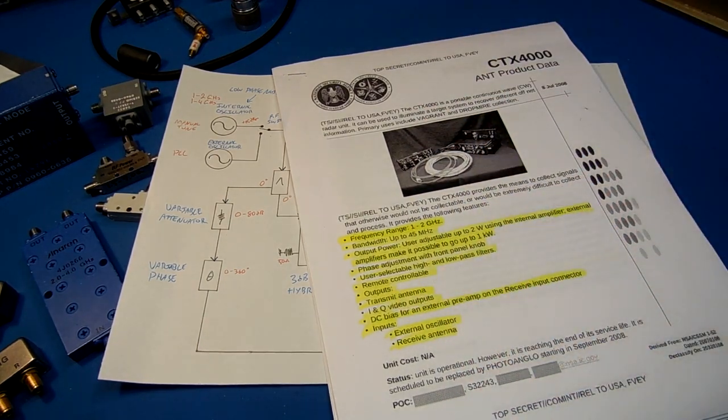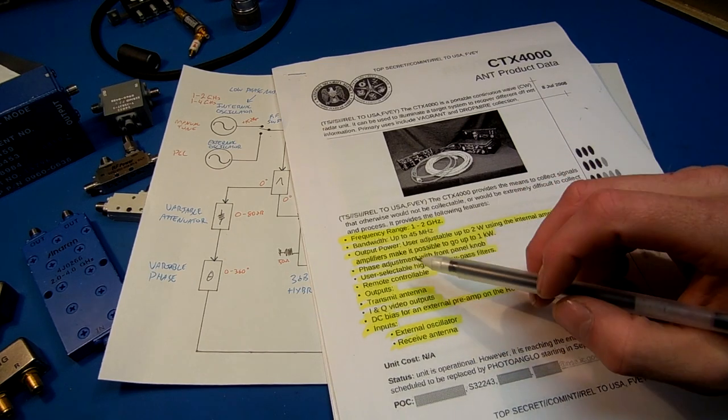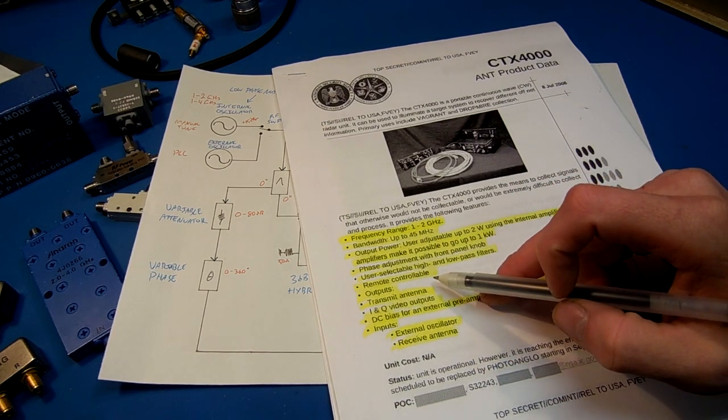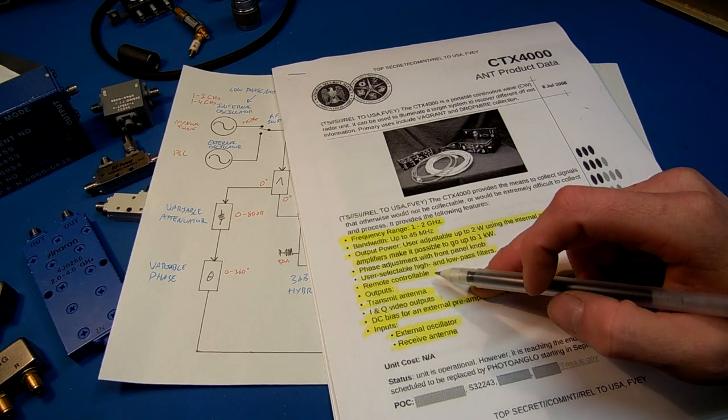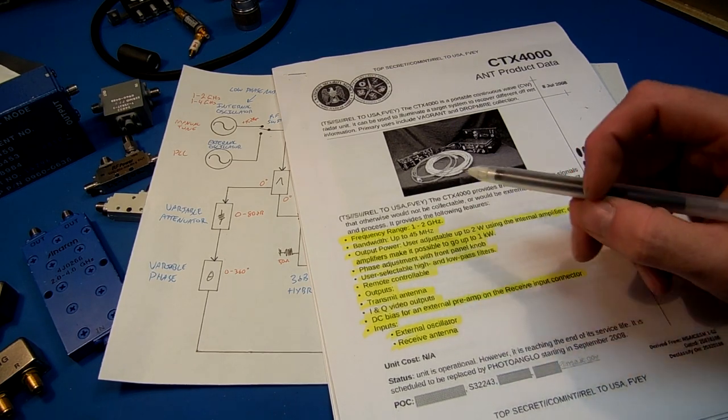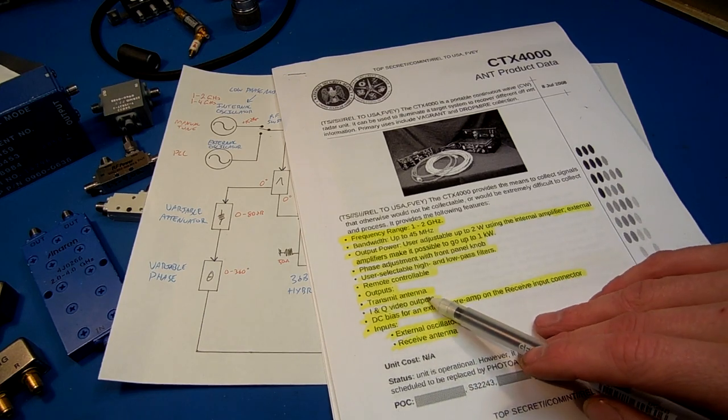Remote controllable, that just means there's probably a remote receiver to shut down the transmit output, in case they're performing a countermeasure sweep or something, you want to be able to turn off your transmitter outputs. Transmit antenna output.